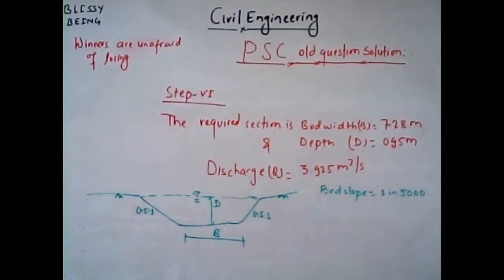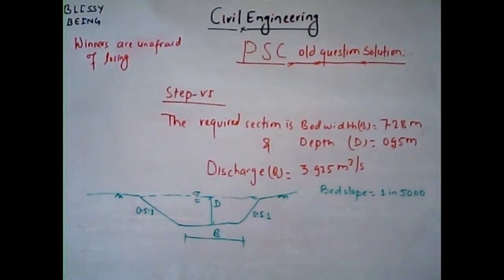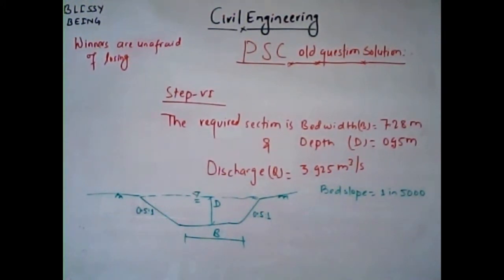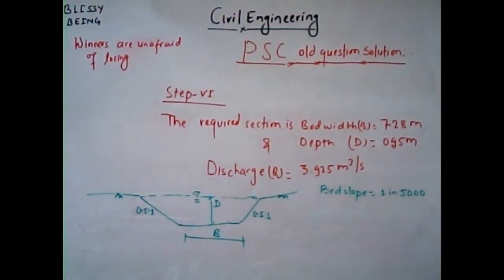The final solution of this problem: bed width B = 7.28 meters, depth D = 0.95 meters, and the maximum discharge the channel can accommodate is Q = 3.925 cubic meters per second. The bed slope is 1 in 5000 and the side slope is 0.5:1, as shown in the figure above representing the channel with the required design parameters.